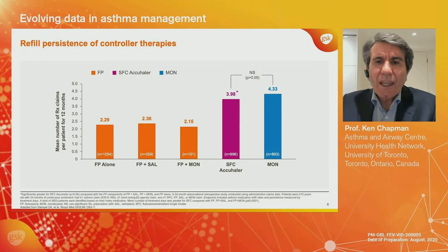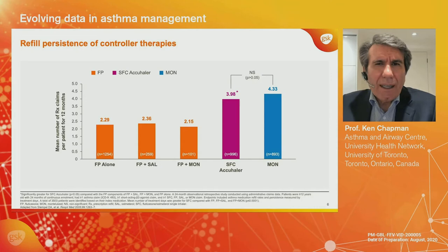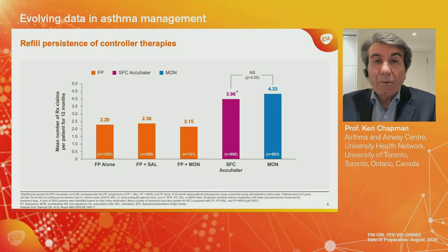Finally, we move to the next column: salmeterol and fluticasone in one inhaler — efficacious and much simpler than the open ICS-LABA combination — and we see prescription refill rates double. So simplicity has an important role in encouraging adherence and, perhaps in the long run, persistence. There's also montelukast, a once-a-day tablet — not a terribly potent anti-asthma regimen, but it is simple, and the prescription refill rates are high. The message is that simplicity becomes extremely important in the long term, and ideally we want something that's both effective and simple for patients to take.